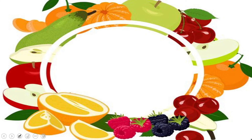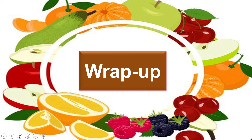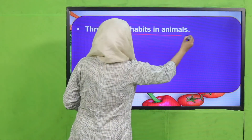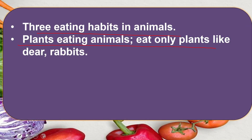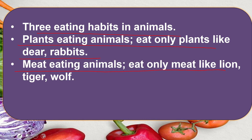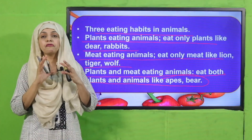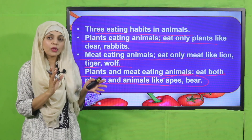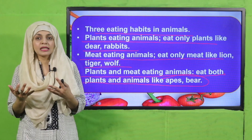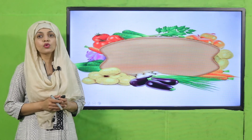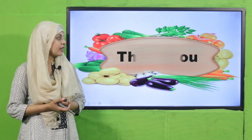This is how you complete the supervised activity. Today's wrap-up: we learned three eating habits of animals — plant-eating animals eat only plants like deer and rabbits; meat-eating animals eat only meat like lion, tiger, and wolf; and plant-and-meat-eating animals eat both like apes and bears. I hope you enjoyed today's lecture. Keep everybody around you safe. Have a good day. Thank you so much. Allah Hafiz.